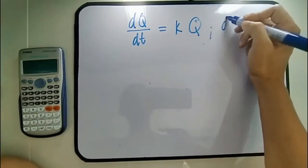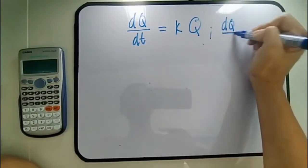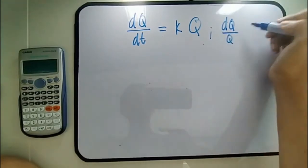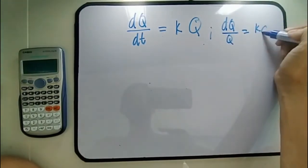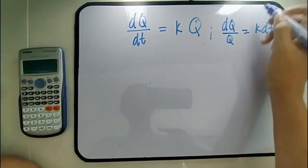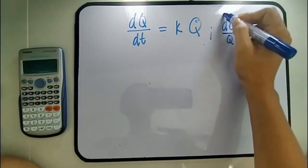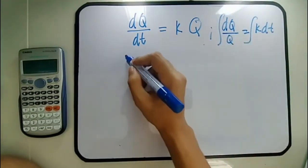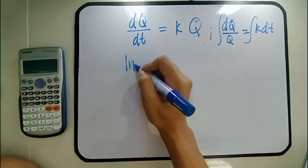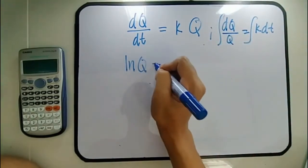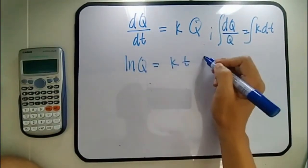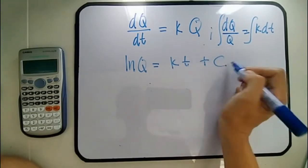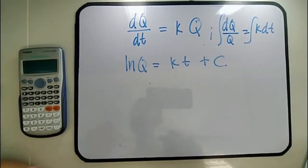We have dQ/Q equals K dT. Integrating both sides, we get ln Q equals KT plus C. Based on the conditions in the problem: